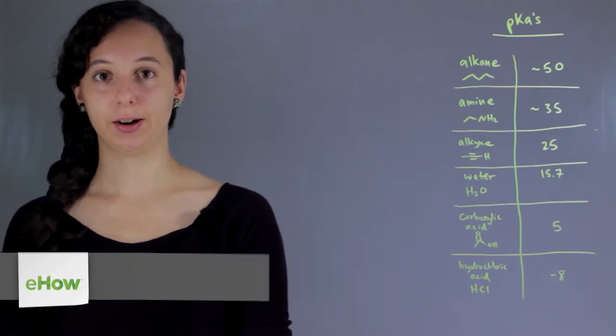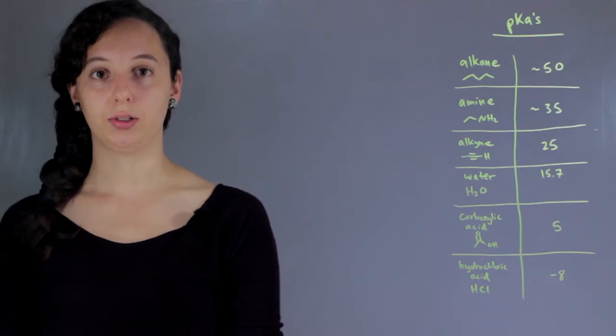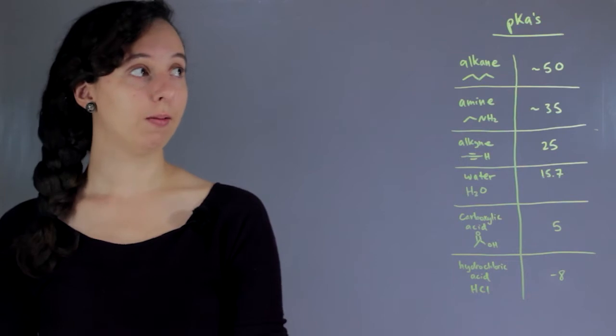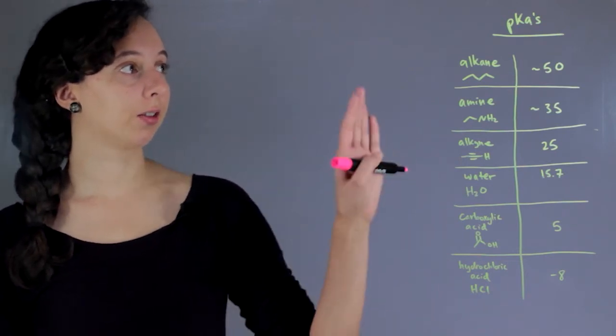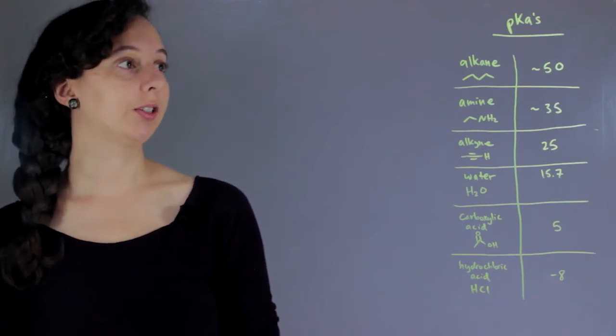There's a bunch of different tables and charts and graphs that you have to be able to use to solve basic chemistry problems. As an example, I've drawn up a little pKa table, and to be able to use it, there's basically two things.